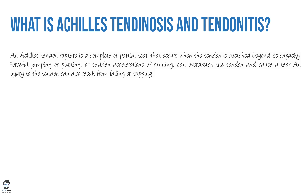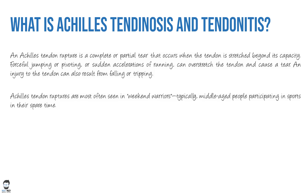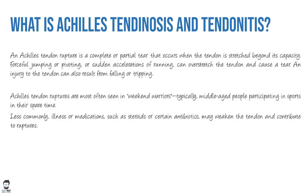Acute ruptures are usually due to forceful jumping, pivoting, sudden acceleration, or running which overstretches the tendon and causes a tear, and can also result from falling or tripping. These are most often seen in so-called 'weekend warriors' — typically middle-aged people participating in sports in their spare time. Less commonly, certain illnesses or medications such as steroids or certain antibiotics can weaken the tendon and contribute to ruptures.